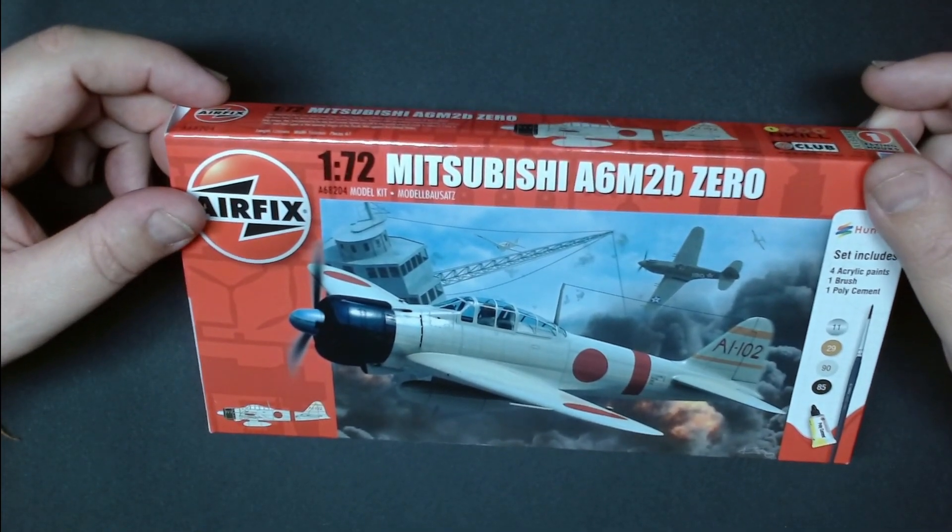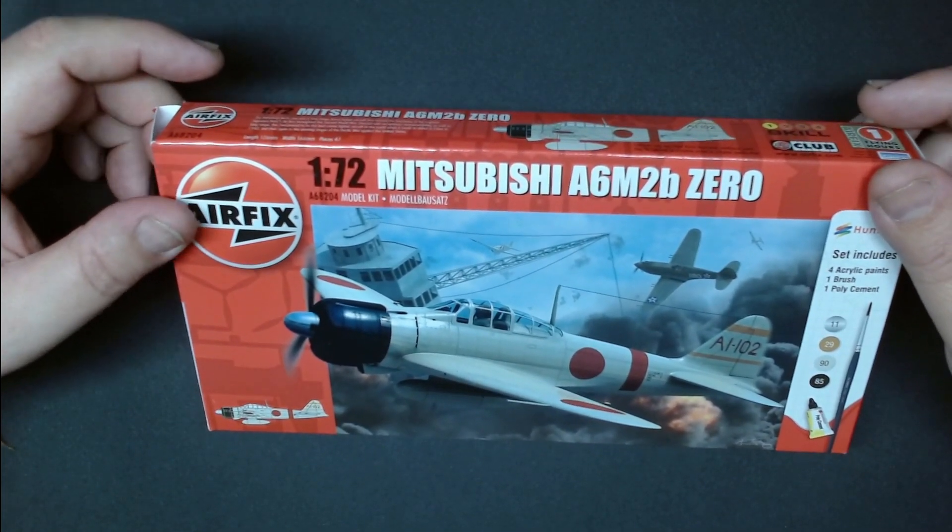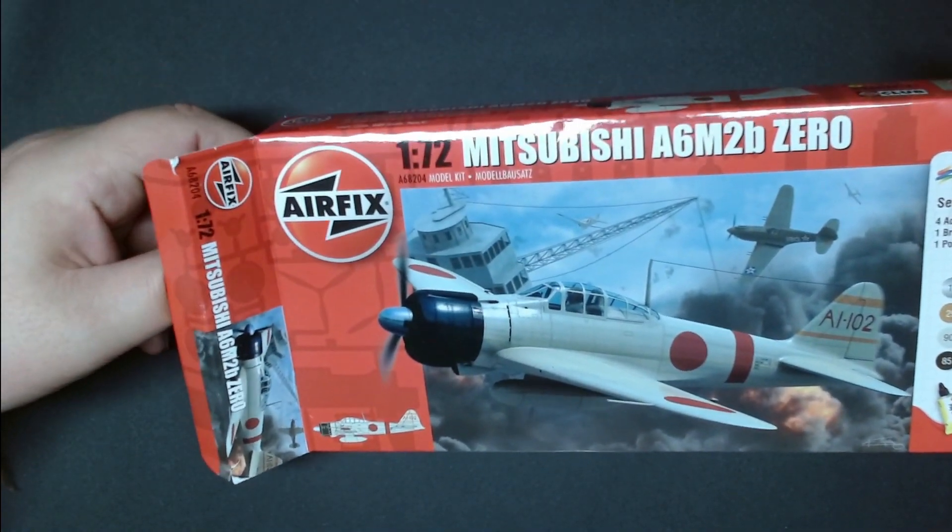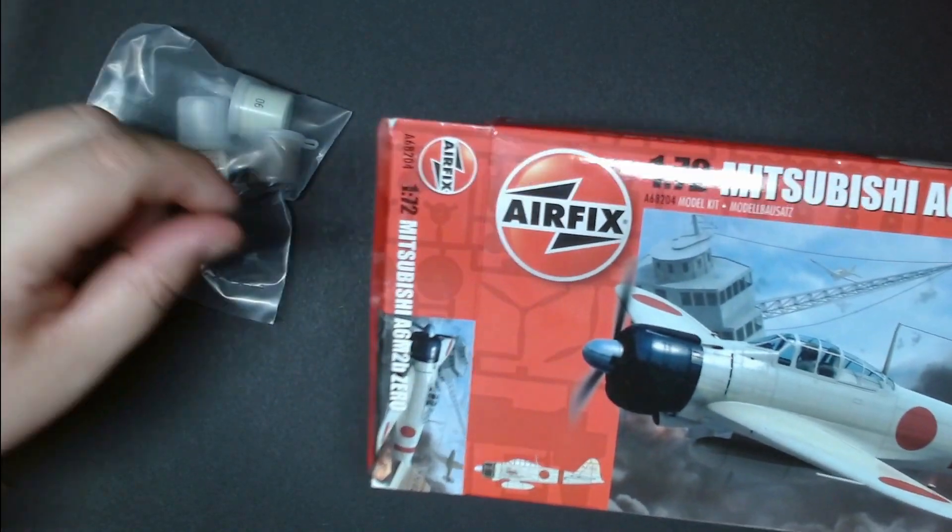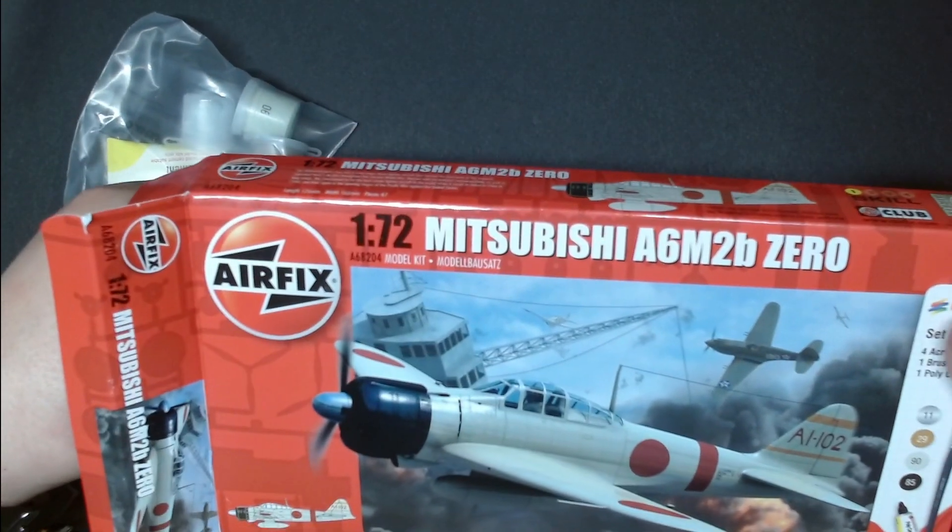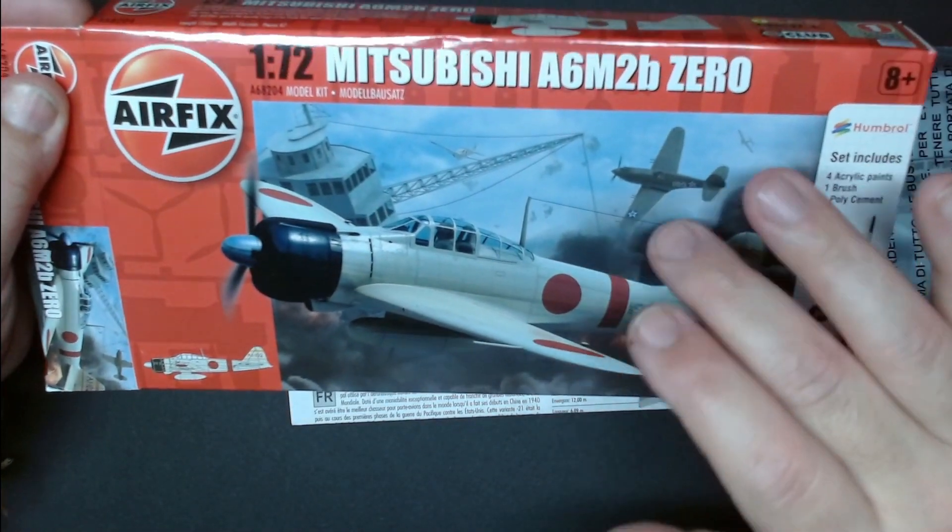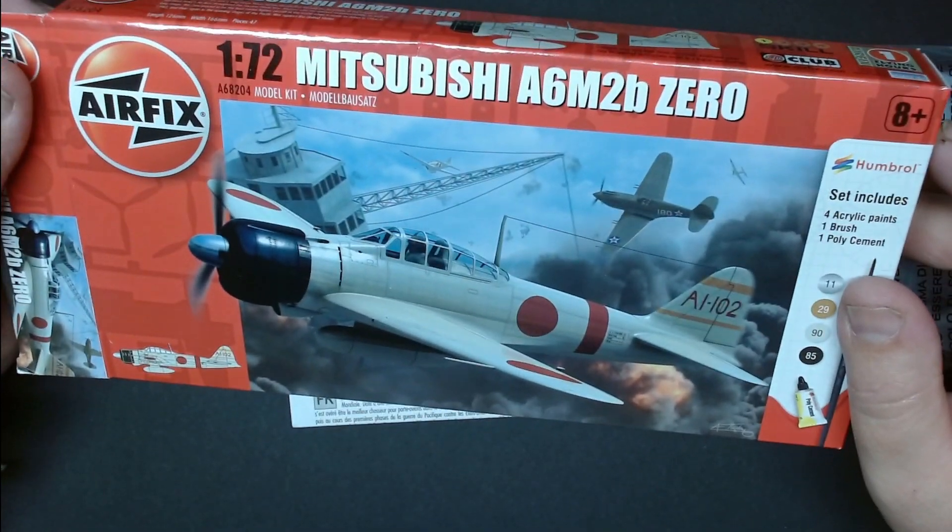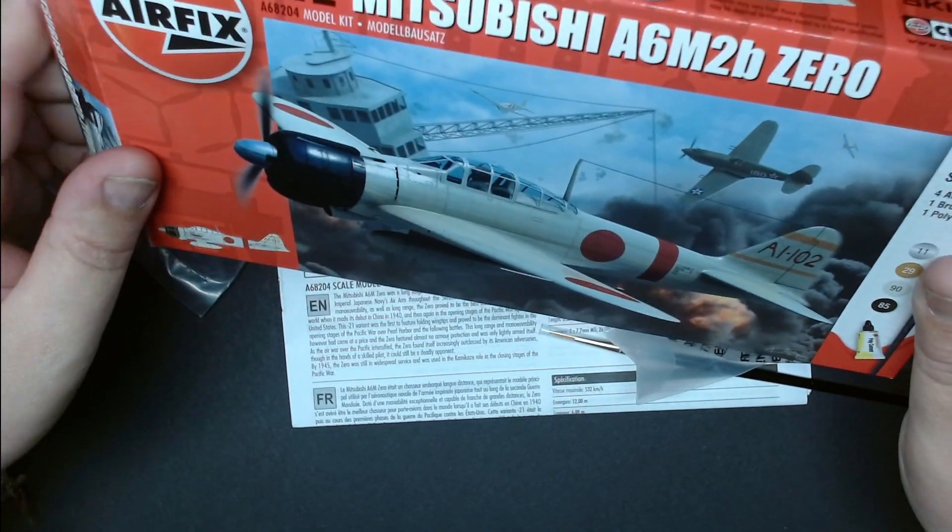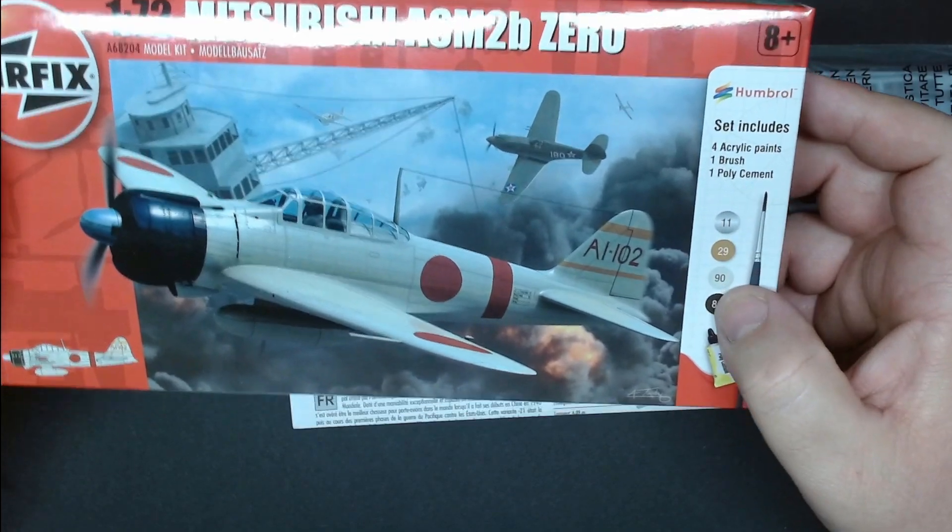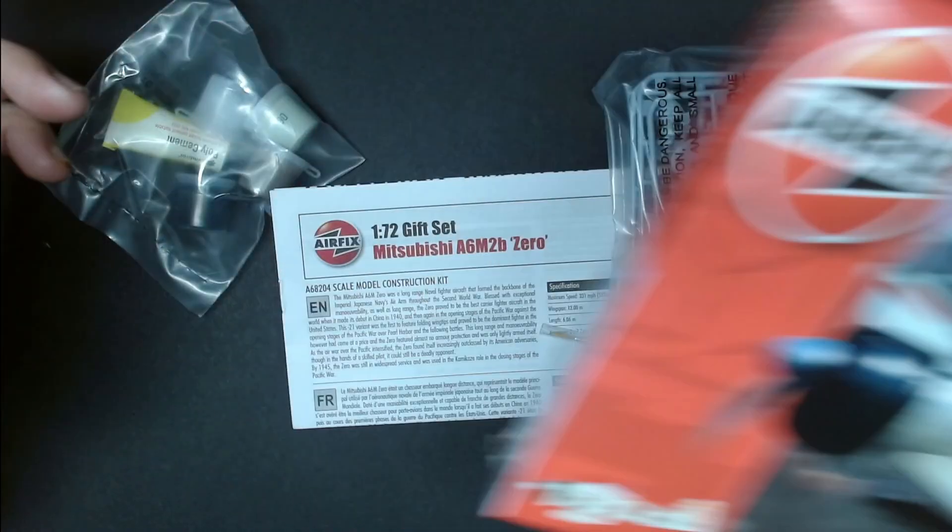We are carrying on with the build on a budget series and today we're going to have a look at the model that we chose. You will remember from the previous episode, we have chosen to build the Mitsubishi A6M2b Zero. This is an Airfix gift set, as you see there's a brush, glue, and paint.